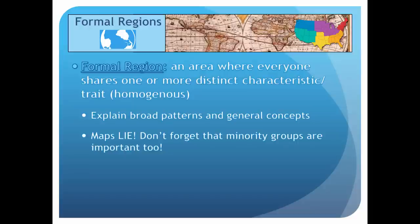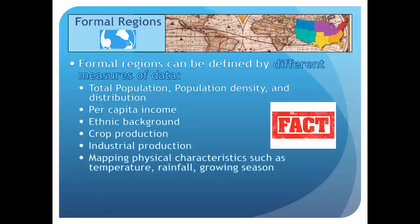When looking at regions, don't forget that maps lie. Formal regions usually only reveal the majority group, and often there are also large minority groups to consider as well. An easy way to identify a formal region is that it is based on facts, so it can be proven to exist.